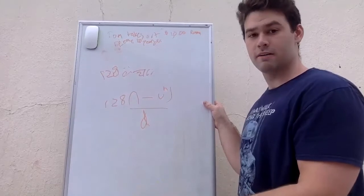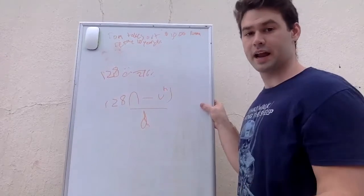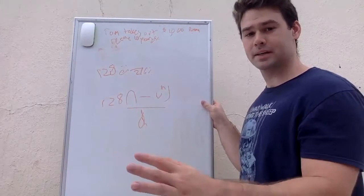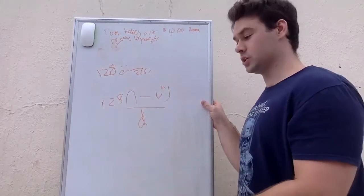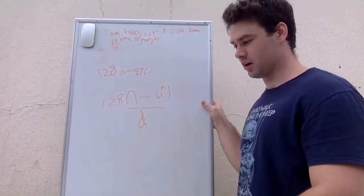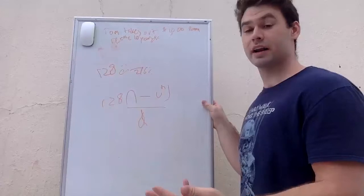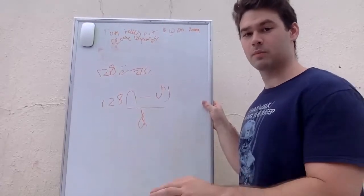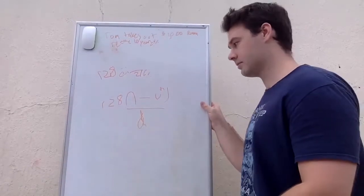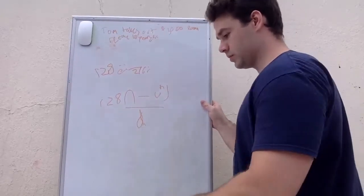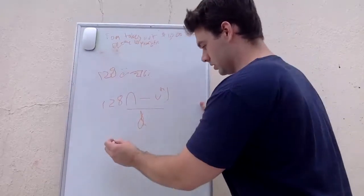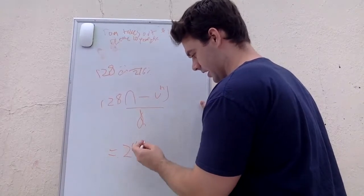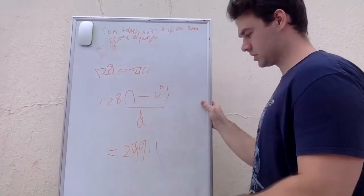We continue using d because the original loan was set up as an annuity due. Unless the question specified Tom just made his seventh payment and the remaining are immediate, we keep the annuity due structure. The present value at time 8 is what Tom owes, and that equals approximately $249.10.